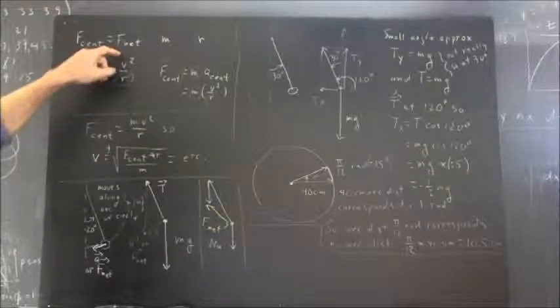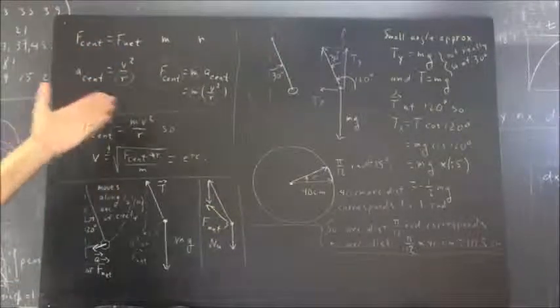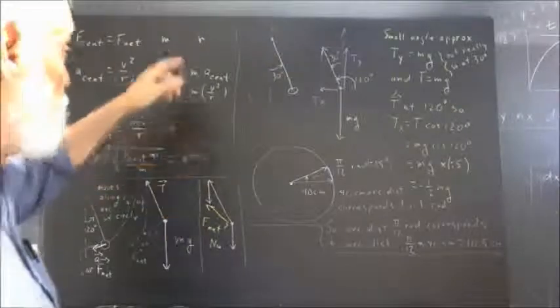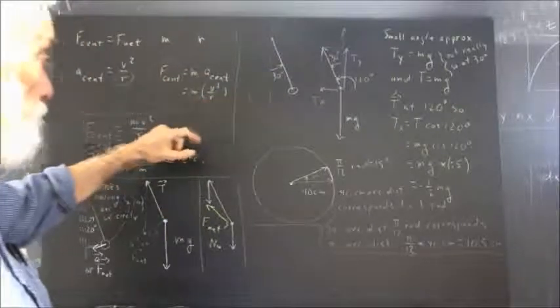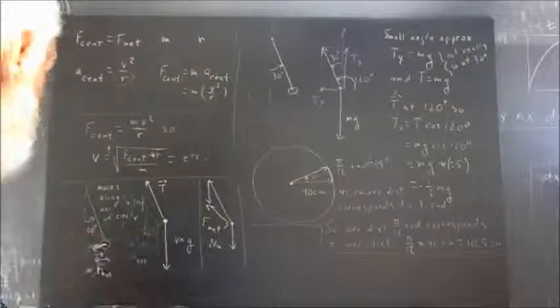Centripetal acceleration is V squared over R, and from this, it follows. The centripetal force is mass times centripetal acceleration, which is then mass times V squared over R.